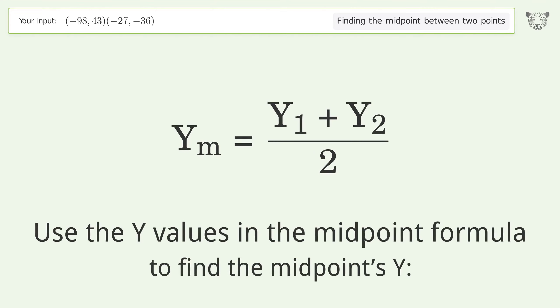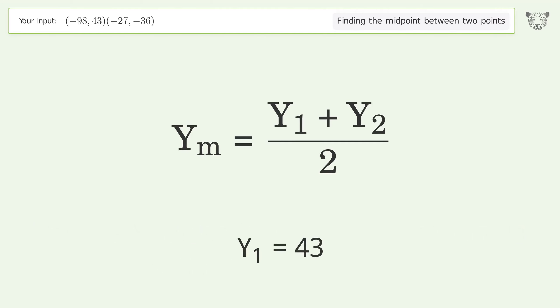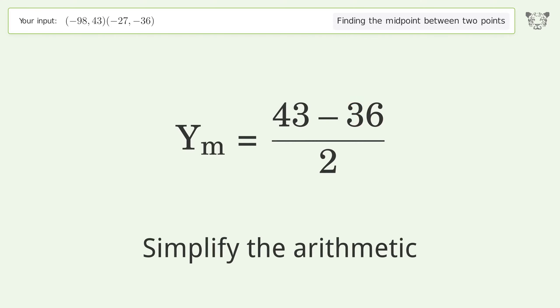Use the y values in the midpoint formula to find the midpoint's y. Y1 equals 43, y2 equals negative 36. Simplify the arithmetic.